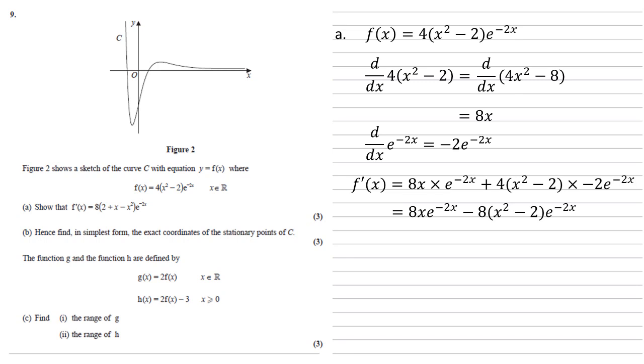We can see that both of our terms here have got 8 and e to the minus 2x. So let's factorise them out, which gives us 8 lots of x minus brackets x squared minus 2. This is all times by e to the minus 2x. Simplifying that bracket gives us 8 lots of 2 plus x minus x squared, times by e to the minus 2x, as required.